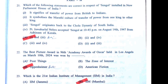The Chola dynasty origin is absolutely correct, and the transfer of power from British to Indians is the symbol of Sengol in the new Parliament. One and three seem correct — one in three makes sense as the answer.